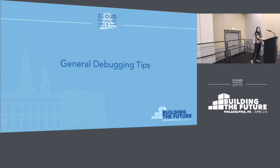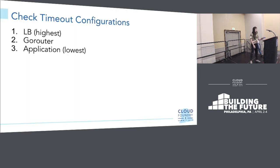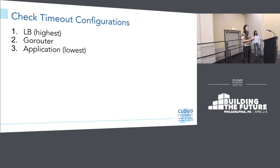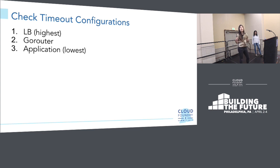Now we're going to go into some brief general debugging tips. One of the first things we like to look at when debugging issues in the routing tier is timeout configurations. In general, you want to make sure that your timeouts are highest on your load balancer and then lowest as you go further down — so load balancer, HA proxy, go router, application — high to low. You want to do this to make sure you don't have any component further down in your network stack closing connections prematurely and causing problems to manifest.